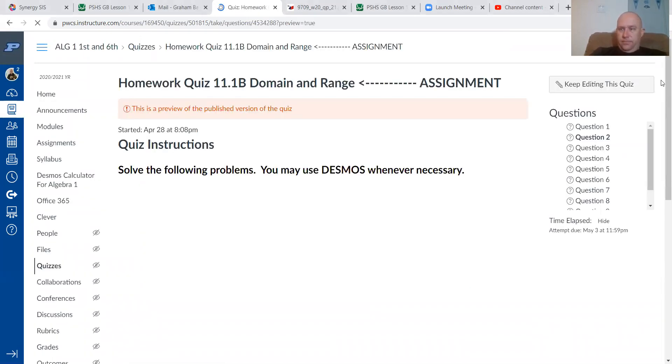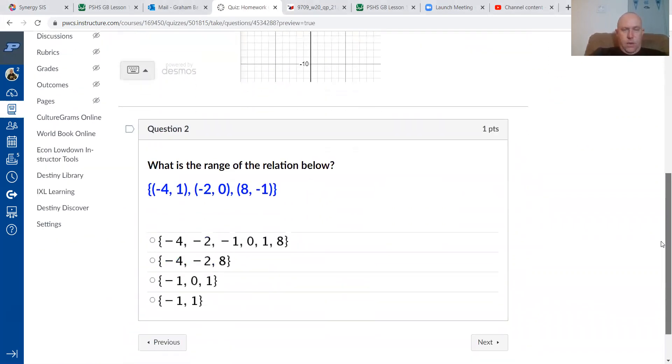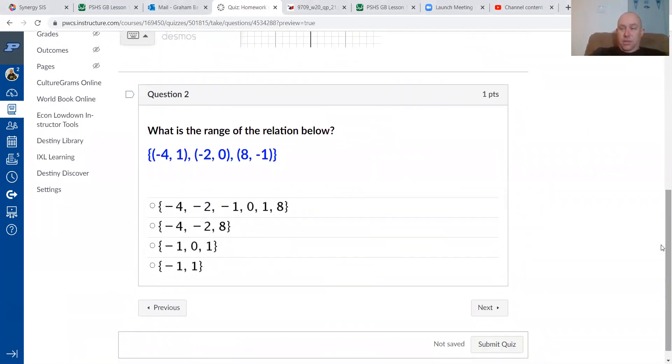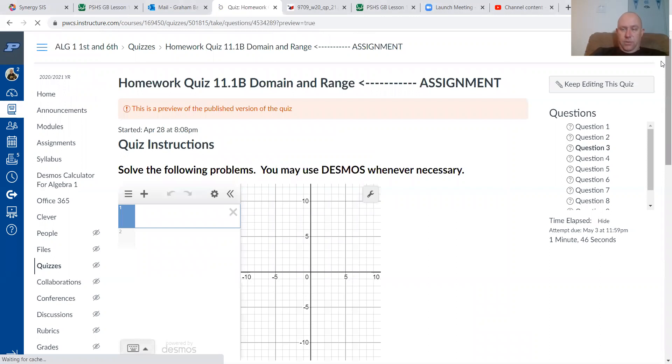Question 2. What is the range of the relation below? So we just talked about range being the y values. So just go ahead and look at the second values. The x values, if it was domain, it would be negative 4, negative 2, and 8. As it's just the range, you're just going to go ahead and look at the y values. That should be a nice, straightforward question. And there are some fairly nice ones for this topic.